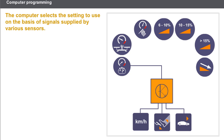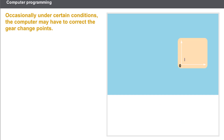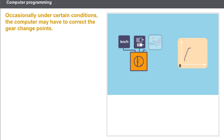However, priority is given to going uphill. Gear change takes place at the gear change point. The gear change points are stored in the sequential gearbox computer and are mainly calculated on the basis of vehicle speed and the position of the accelerator pedal.